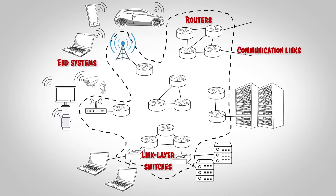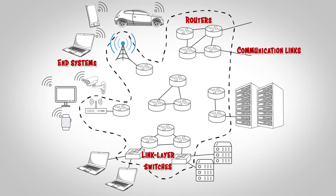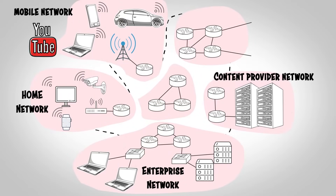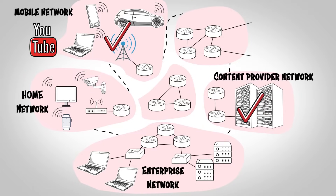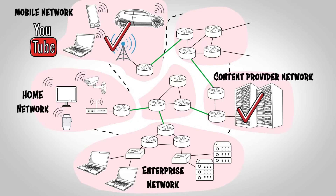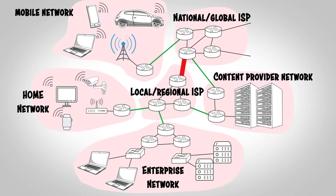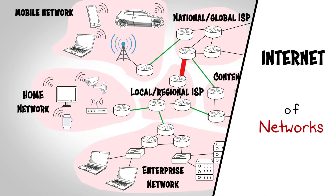A collection of end systems, routers, link layer switches, and communication links forms a network. Now if I want to watch a video on YouTube, my network should be connected to the content provider network or YouTube network. In other words, both networks should be connected to the internet. The internet connection is provided by national or local internet service providers or ISPs. Internet is all about connecting end systems, so internet service providers are also connected to each other. This forms an interconnected network, or internet. So we can say that internet is a network of networks.